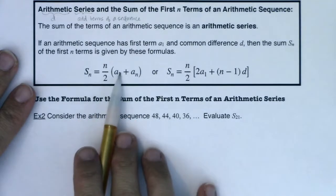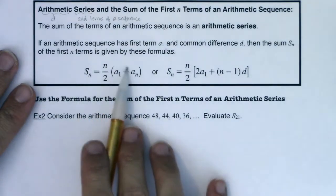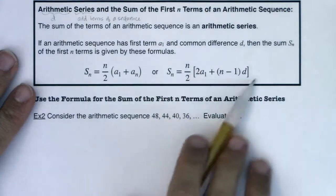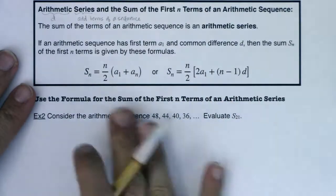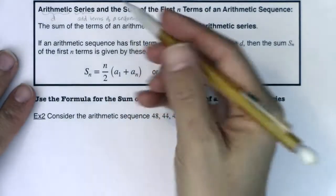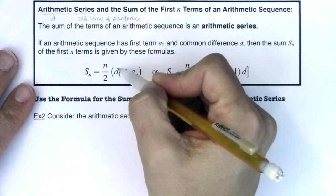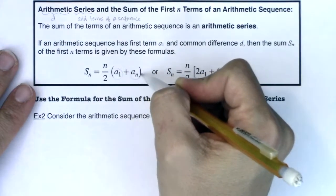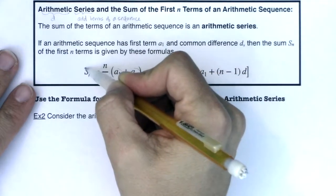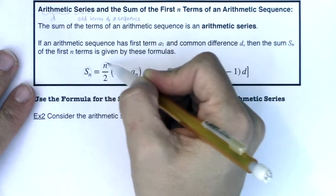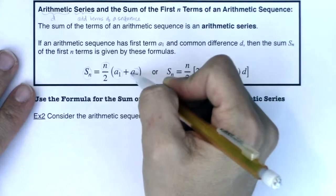And you can use either of these two formulas. Sometimes it's better to use this version, sometimes it's better to use this version. But let's take a look at how many variables we have. So with this s_n formula, you can see you have a₁ as a variable, you have a_n as a variable, you have s_n as a variable, and you have n as a variable. So you have four variables here.